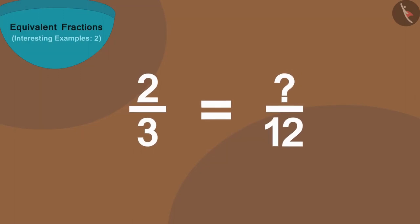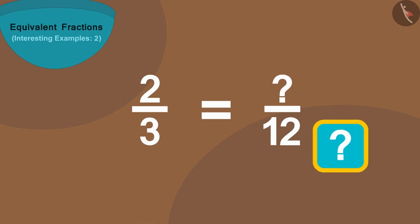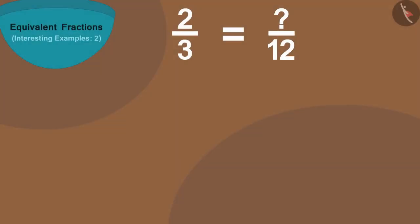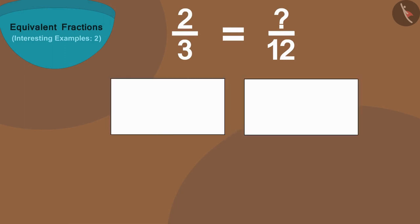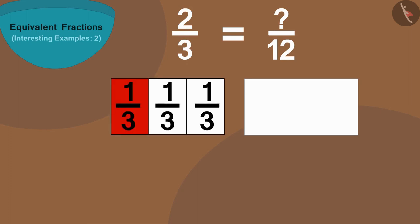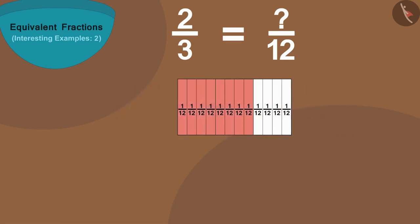This is Raju's last fraction. Children, can you find this last fraction? If you wish to, you may find it by stopping the video. Well done children, you have found it absolutely right. If we take two equal length strips and divide one of them into 3 equal parts and the other into 12 equal parts, and then put the second strip on top of the first strip.